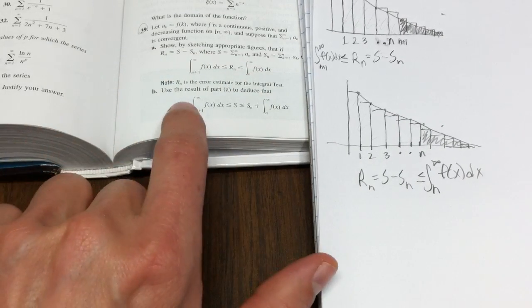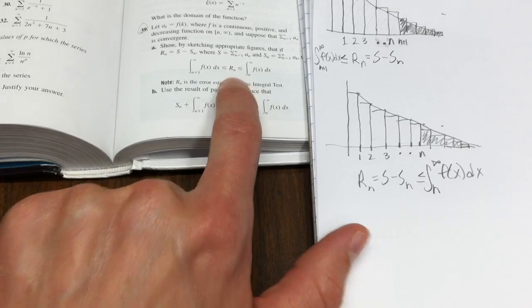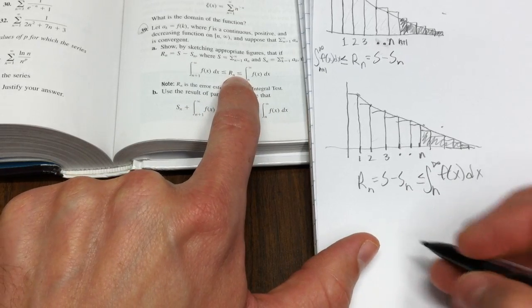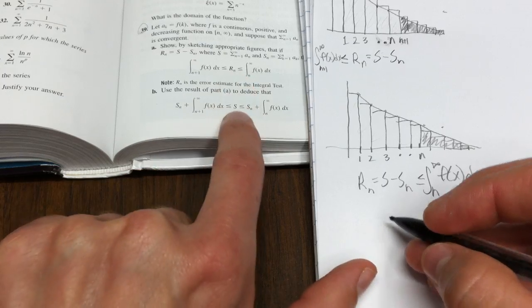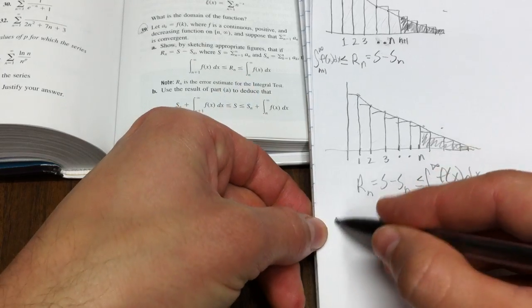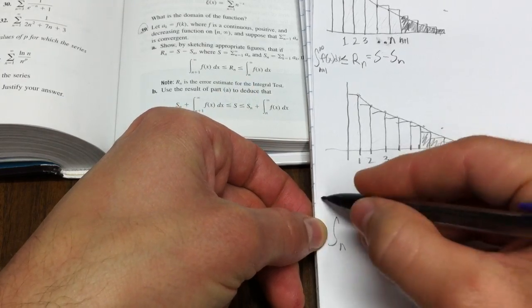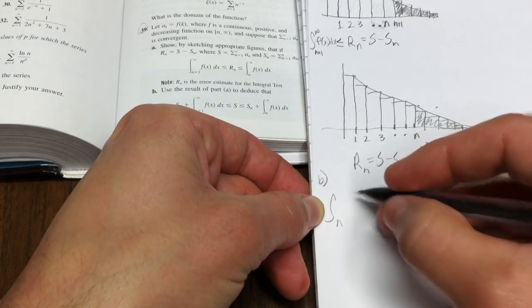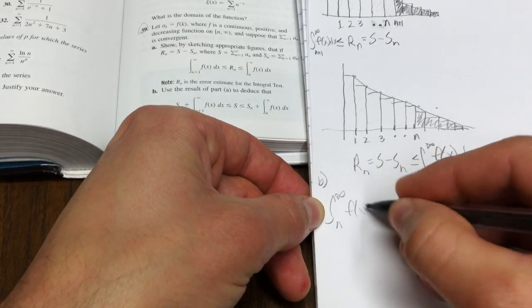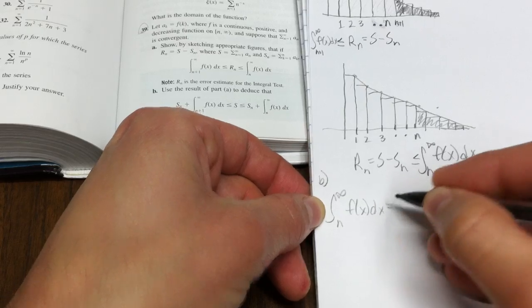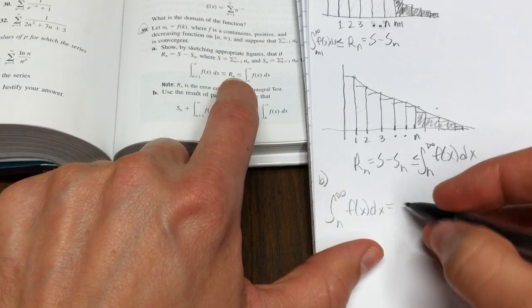Now, if you wanted to do part two, take part two, use the definition of Rn, and work with it. So we have the integral from N, so this is part B, N to infinity of f of x dx.